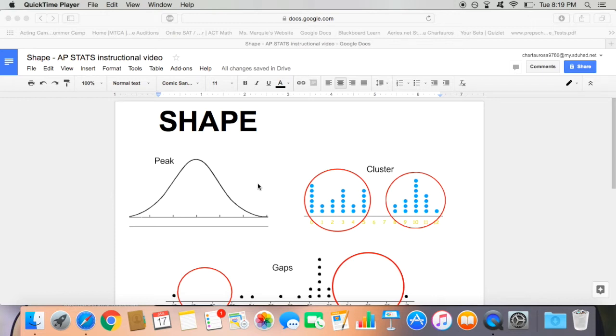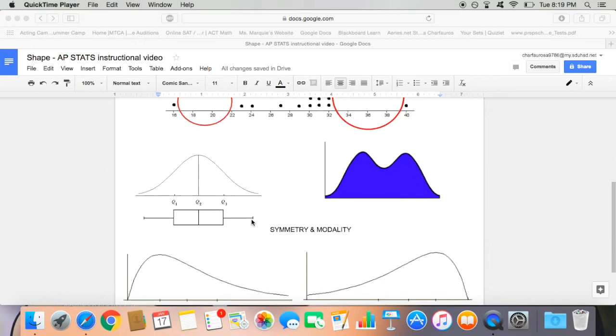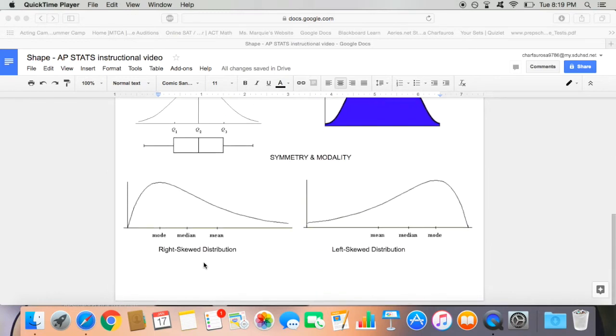For example, try identifying major peaks, clusters of values, and obvious gaps. The AP test will test you on key vocabulary, so keep these following words in mind: symmetry, modality, and skewness.